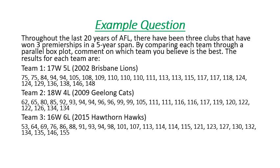So by comparing each team through parallel box plots I want you to comment on which team you believe is the best and these are the results. So basically the first thing we need to do is we need to create five number summaries. We might want to look at the mean of these teams as well but create five number summaries of each team and then we can construct our box plots.